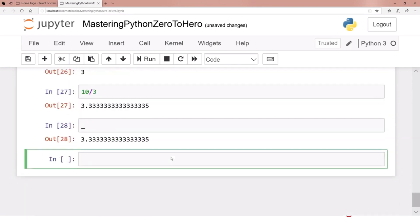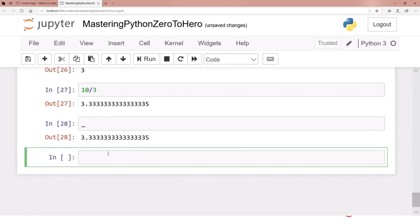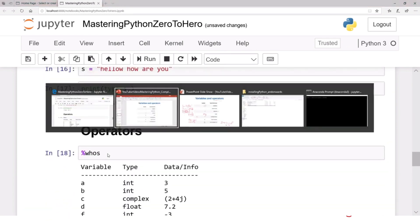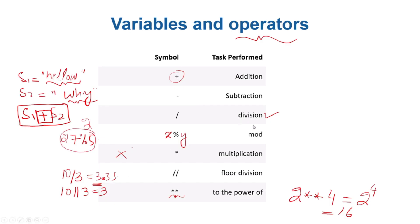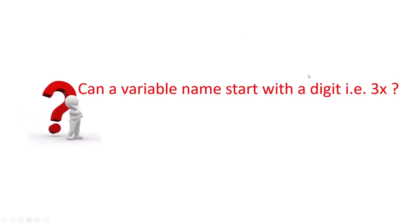That's about it for operators — we will see them more and more later on. Before ending this video, I leave you with a question. We saw variable names like sum_of_a_and_b, x, y — they can be lengthy, descriptive, or short.